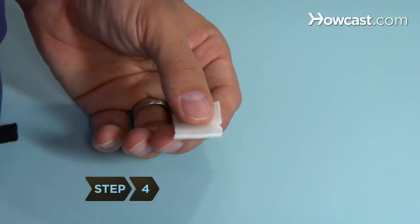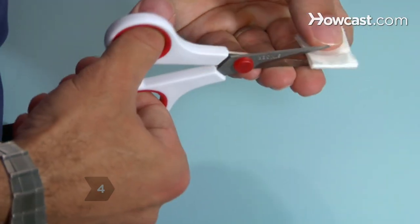Step 4: Repeat on the other side, cutting a triangular notch that matches the one you just cut.